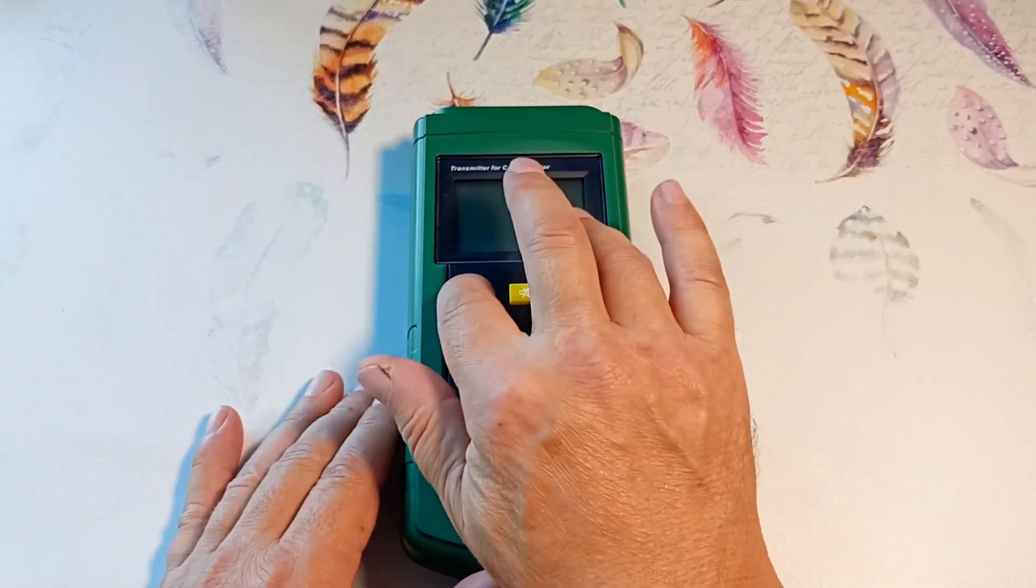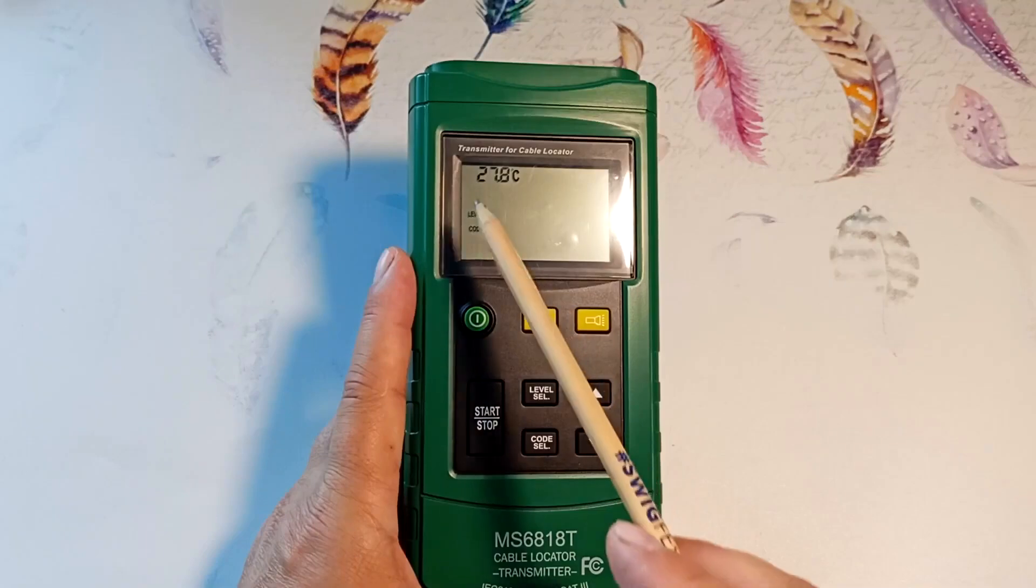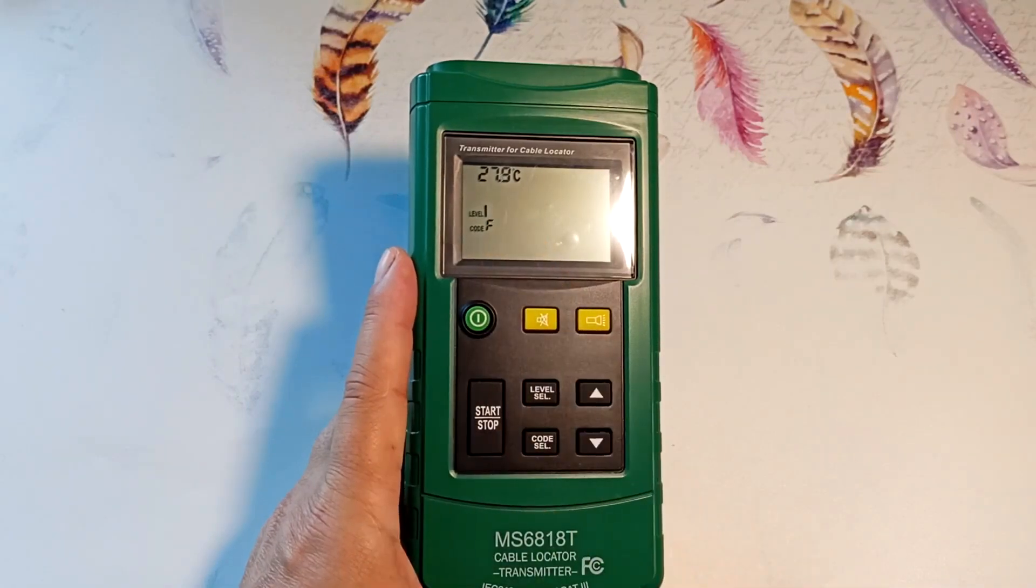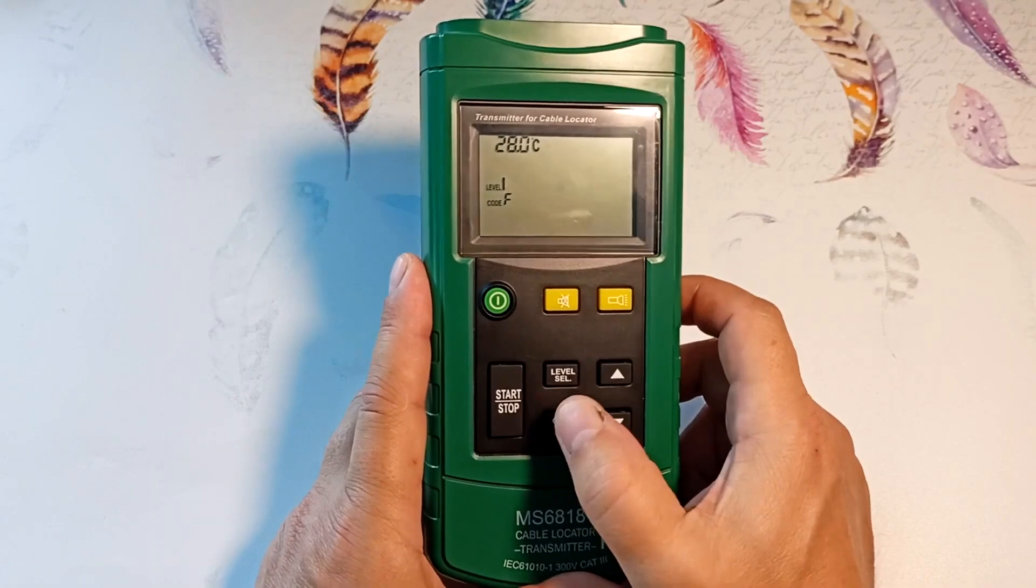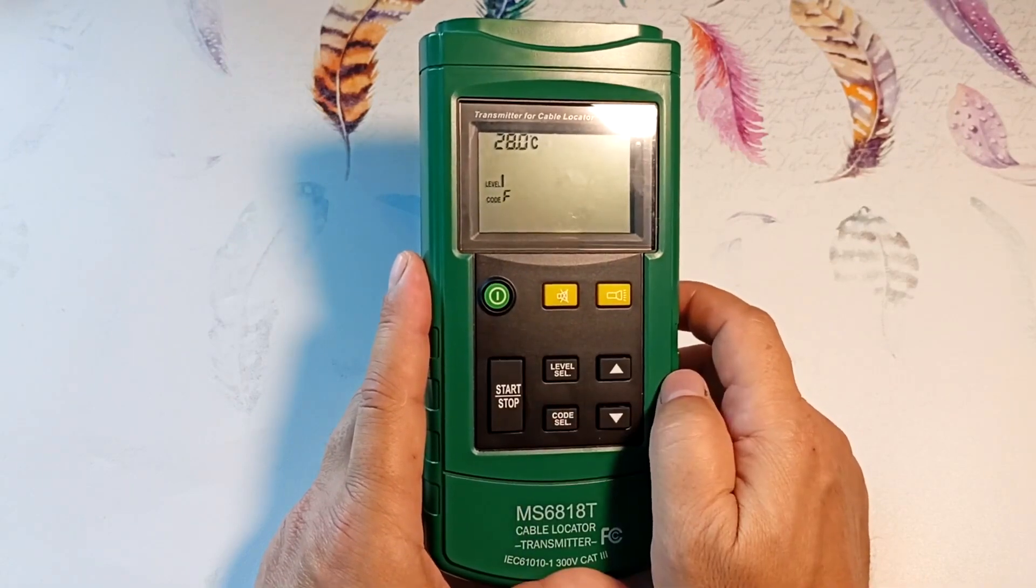Turn on the generator with this key. It shows the ambient temperature. The temperature at which the generator and receiver operate is from minus 10 to plus 50 degrees. This button enables the selection of signal encoding.